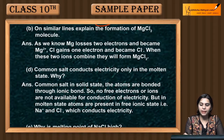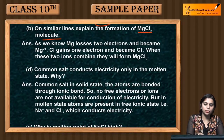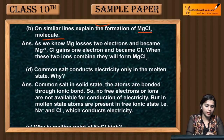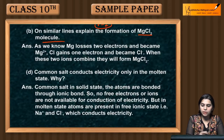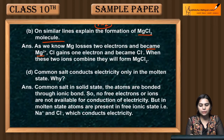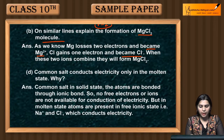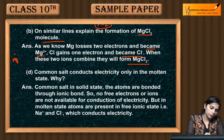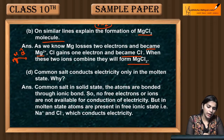On similar lines, explain the formation of MgCl₂ molecule. As we know, Mg loses two electrons and becomes Mg²⁺. Cl gains one electron and becomes Cl⁻. When these two ions combine, they form MgCl₂.